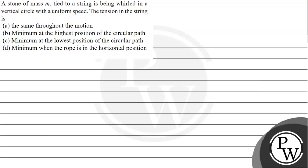Hello everyone, let's get to the given question. The question says a stone of mass M tied to a string is being whirled in a vertical circle with a uniform speed.